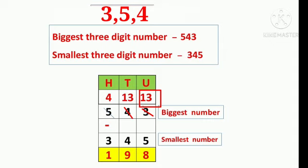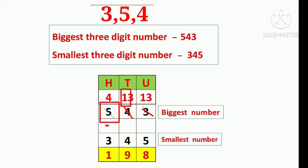Now here in the tens place: 3 tens minus 4 tens. We cannot subtract 4 tens from 3 tens. So we untie 1 hundred from 5 hundreds. We strike out 5 in the hundreds place and write 4 above it.